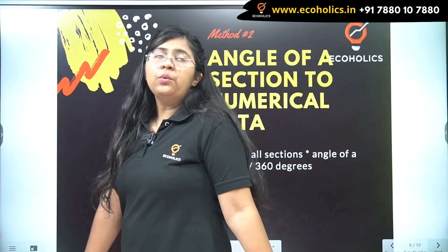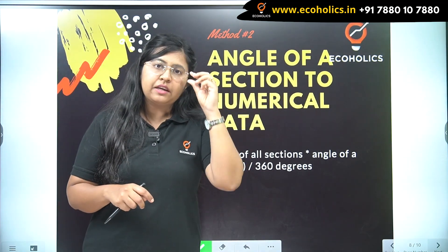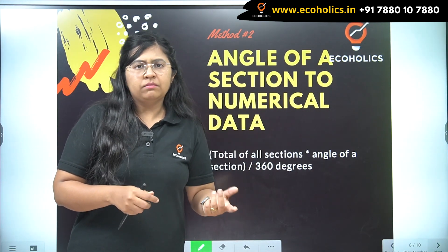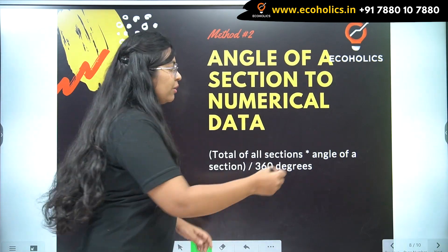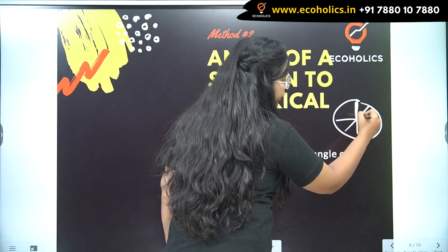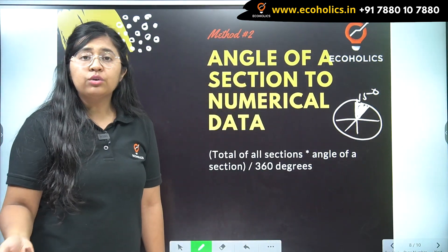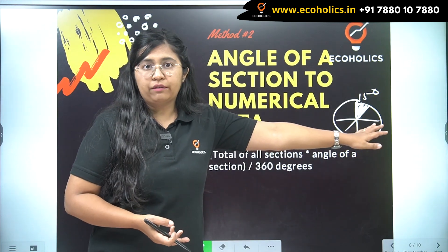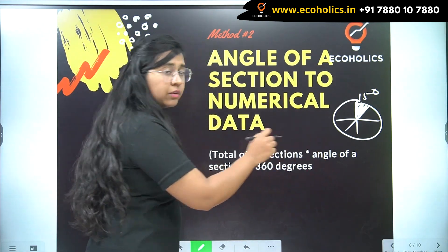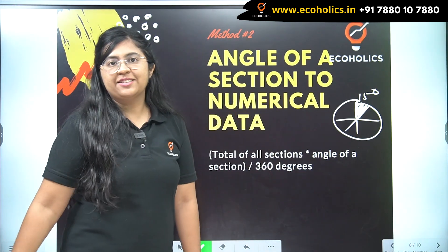Next, when you have to convert the angle of a section to numerical data — for example, if a section is given as 15 degrees — the formula is: total of all sections multiplied by the angle of the section, divided by 360 degrees. Make sure to write down the degree signs clearly.